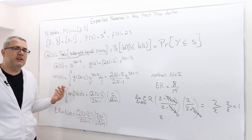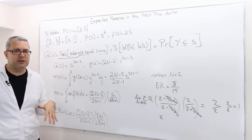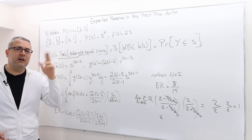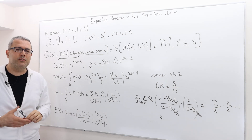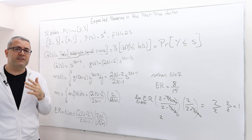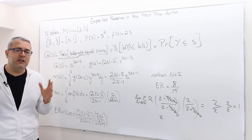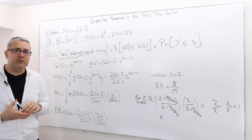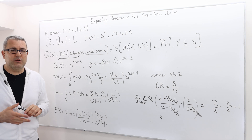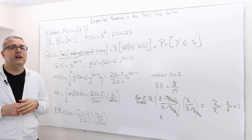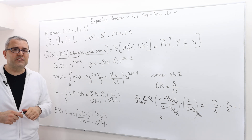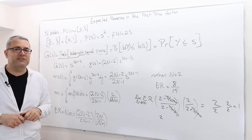Is it a coincidence that the expected revenue in the second price auction and the first price auction are the same? No — as mentioned two or three episodes earlier, the first price auction and the second price auction have identical expected revenues under certain assumptions. In fact, this is what we'll generalize next: there are many auction mechanisms that lead to the same expected revenue.